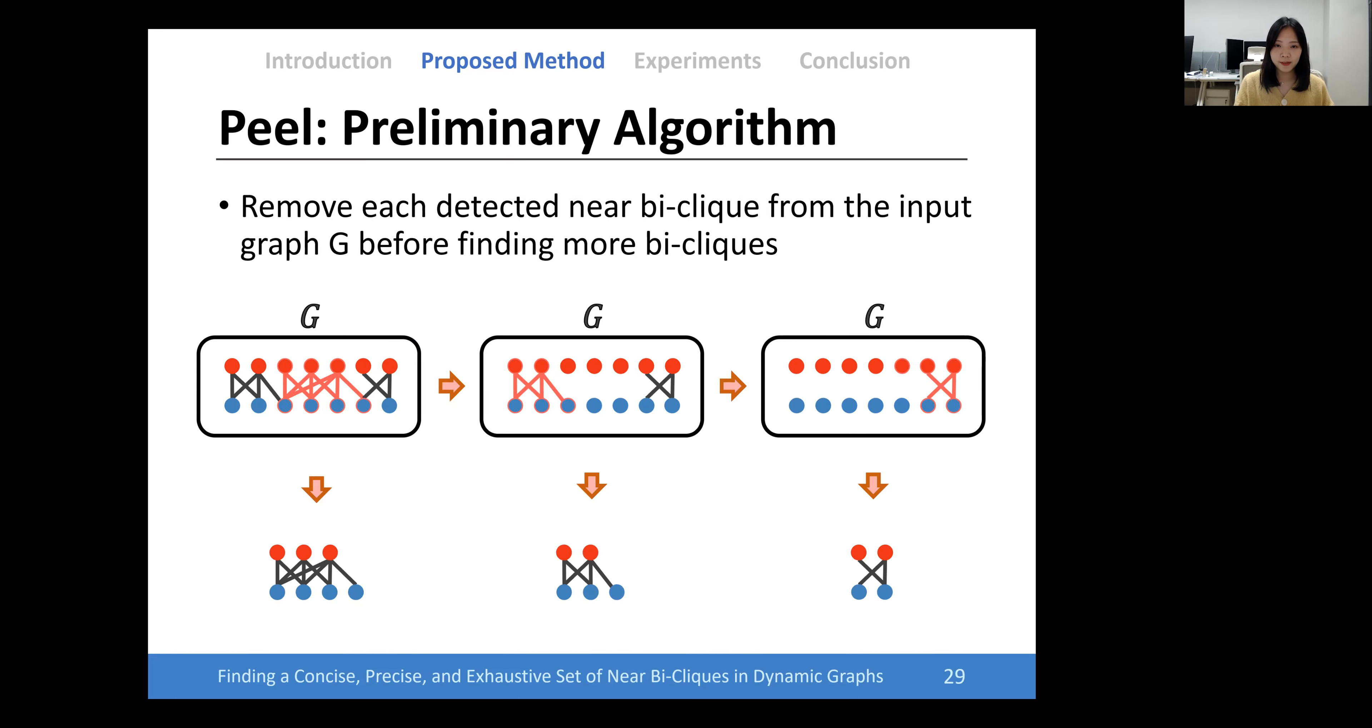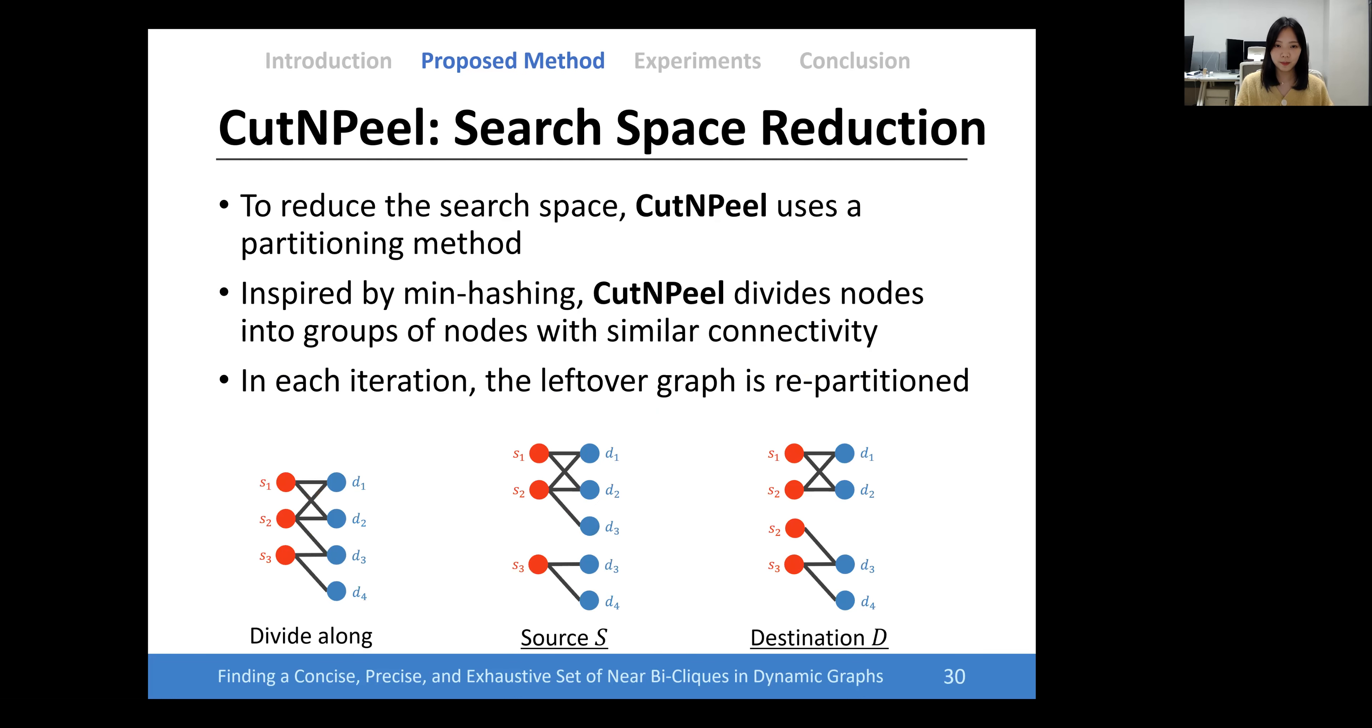Cut and Peel removes each detected near bi-clique from the input graph before finding others. To reduce the search space, Cut and Peel uses partitioning methods. It divides nodes into groups of nodes with similar connectivity. In each iteration, the leftover graph is adaptively repartitioned.